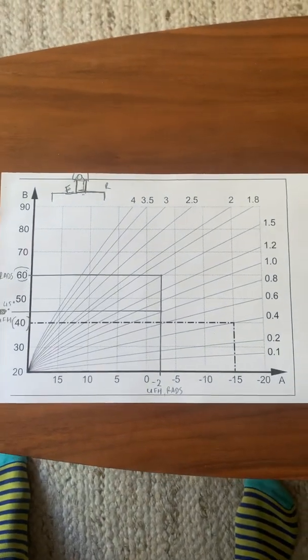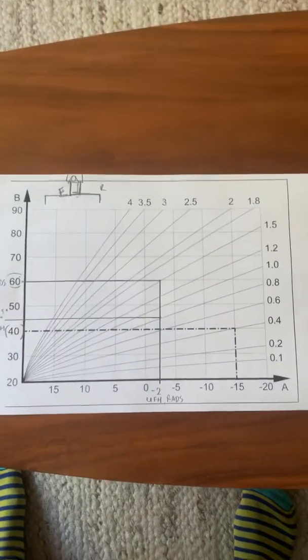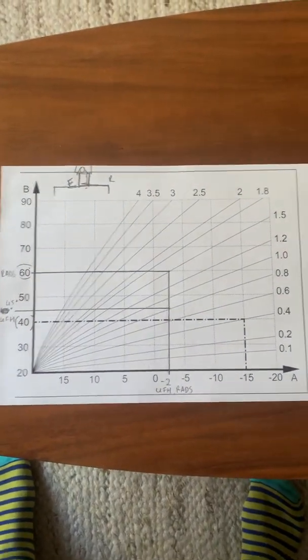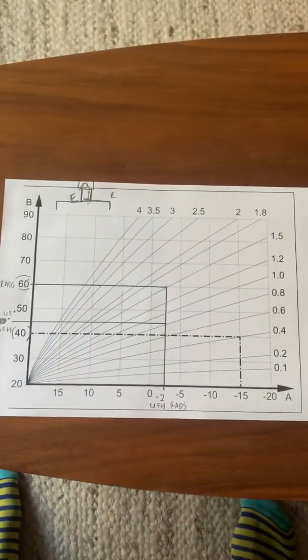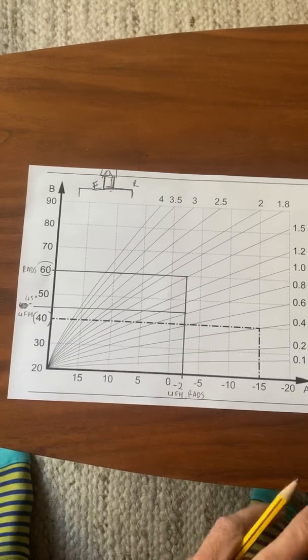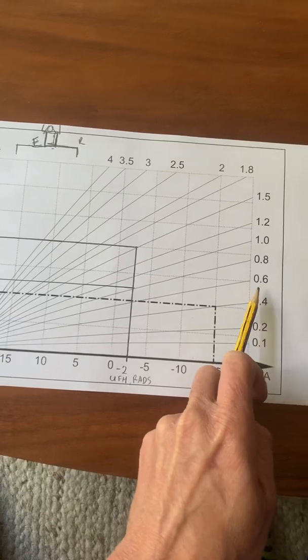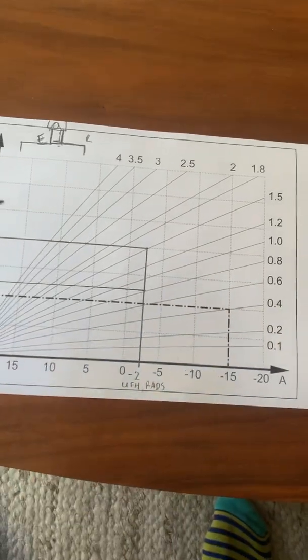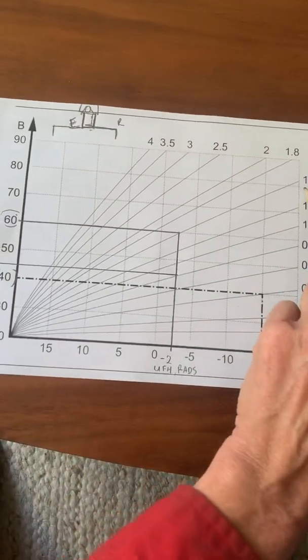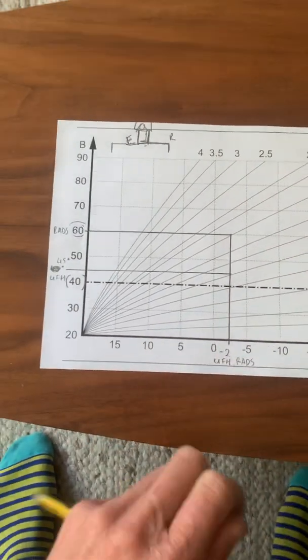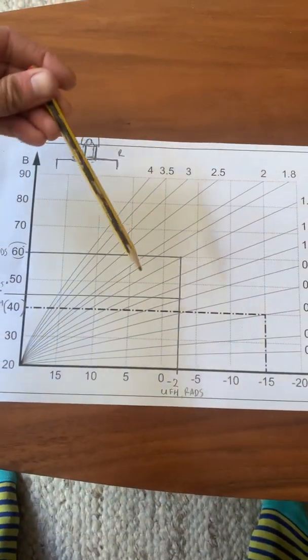This is a graph showing the curves you can select with the Vaillant for weather compensation. I selected 0.6 for the underfloor heating and then I selected 1.5 for the radiators, and that's the curve the boiler will follow.